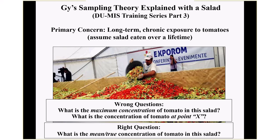Let's think about this simply. Primary concern here is long-term chronic exposure to tomatoes in my salad. Assume this entire salad is eaten over a lifetime — this is my exposure area. Here's the wrong questions I asked most of my first 10 years: what's the maximum concentration of tomato in the salad? If I zoom in close enough with chopsticks and pluck out a piece of tomato, the maximum concentration is 100% if tomatoes are there. Another wrong question: what's the concentration of tomato at point X in the salad? That's not what risk assessors need. The right question is: what is the true mean concentration of tomato in this salad?